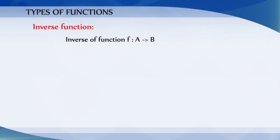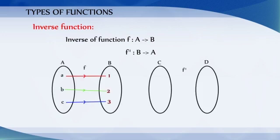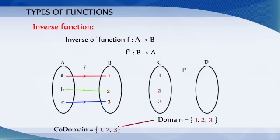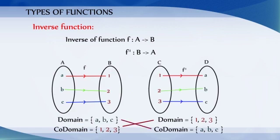Inverse function. The inverse function for the given function f from A to B is f-inverse from B to A. That is, the domain for the function f-inverse is the co-domain of the function f, and the co-domain for the function f-inverse is the domain of the function f.